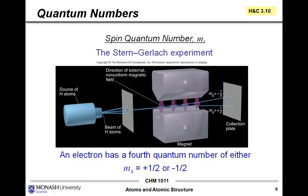To finish off, we'll talk about the fourth quantum number. This is the spin quantum number, and it has the symbol m subscript s. The Stern-Gerlach experiment described a source of hydrogen atoms being passed through a magnet. As you can see from the figure, there was a north and south pole to this magnet, so the beam was passing through a magnetic field.